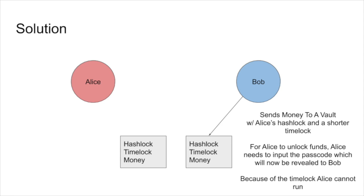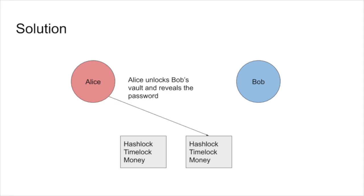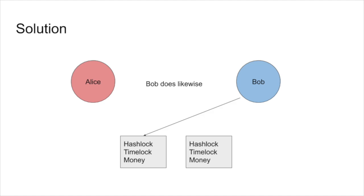So Bob can create another vault with Alice's hash lock and a shorter time lock. If Alice wanted to unlock the funds, Alice needs to input the passcode, which will now be revealed to Bob. And because of the time lock, Alice cannot run away. As expected, Alice unlocks Bob's vault and Bob unlocks Alice's vault, and the swap has just happened.